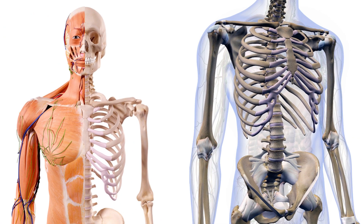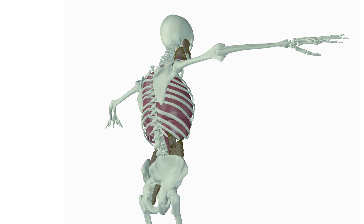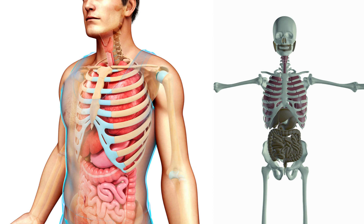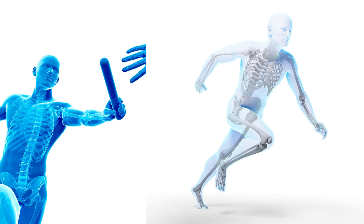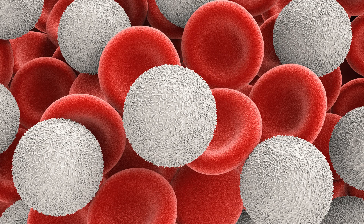The human skeletal system has several important functions. One, support: the skeletal system provides the framework which supports and maintains the shape of the body. Two, protection: the skeletal system protects the internal organs of the body. Three, movement: the skeletal system provides an attachment for the muscles, which makes body movements possible. Four, storage and supply: the skeletal system stores important minerals like calcium and phosphorus and produces both red and white blood cells.